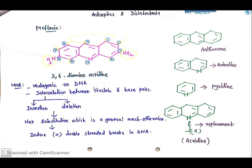Whatever the nucleic acid base pairs are there, in between them they get inserted or deleted. So insertion and deletion type of intercalation between nucleic acid base pairs will occur, which is not substitution. Usually intercalation takes place by substitution of nucleic acid base pairs, but here proflavin acts by either insertion or deletion. It induces double stranded breaks in the DNA by intercalation.